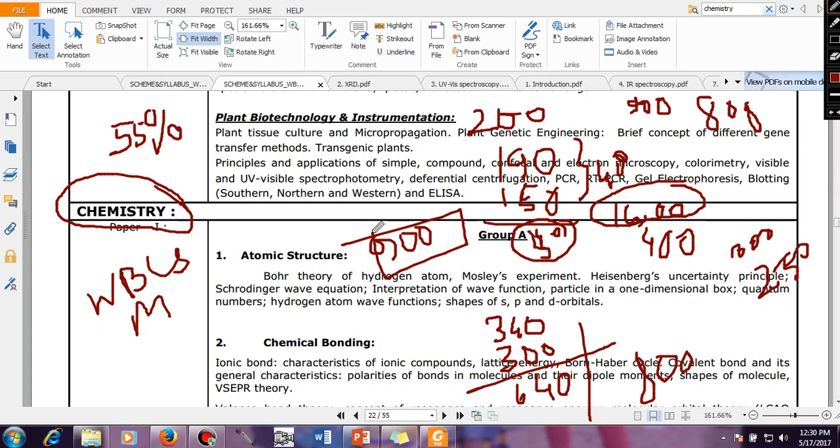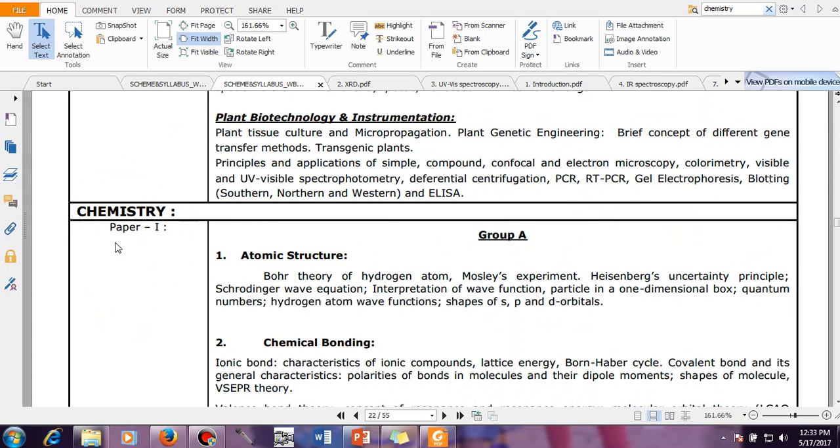Now for that you have to have a good hold over your optional paper. That is why optional paper is important, and here we will be covering chemistry. You have two papers, Paper 1 and Paper 2, each contains 200 marks, total 400 marks. In Paper 1 you have atomic structure.